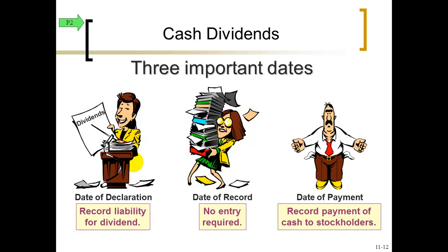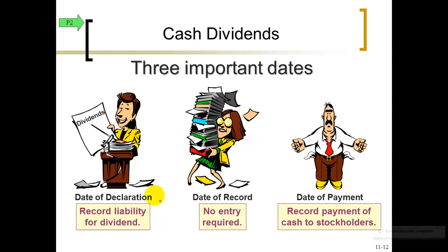For a dividend, there are three different dates to keep track of. The first is the declaration date — when the board of directors decides to pay a dividend. The second is the date of record — you have to own shares on this future date to collect the dividend. The third is the date of payment — when the dividend is actually paid. Of the three, the declaration date and payment date require a journal entry, whereas the date of record requires no journal entry.